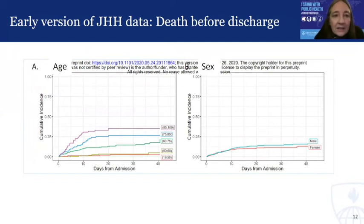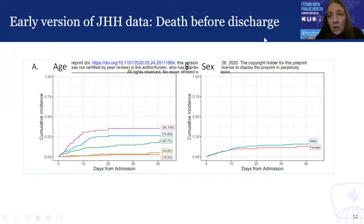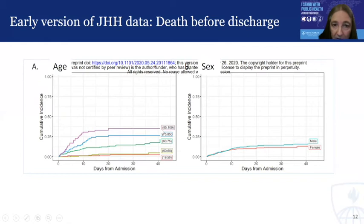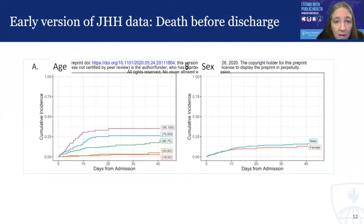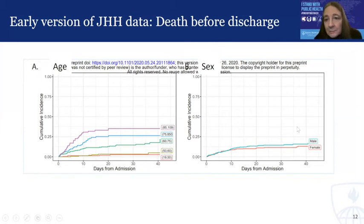Here's an example from early Johns Hopkins Hospital COVID-19 data characterizing death before discharge, where discharge is the competing event. On the left, comparing by age groups: among the oldest individuals, cumulative incidence of death was quite high — into the low 30% — whereas among younger ages it was considerably lower, particularly below age 60. On the right, comparing males and females for the same outcome: death before discharge was a little bit higher for males, but perhaps not by as much as one would expect.